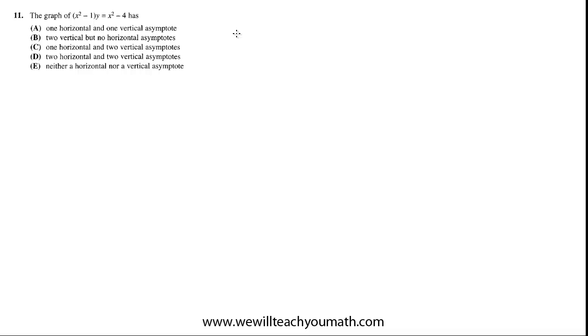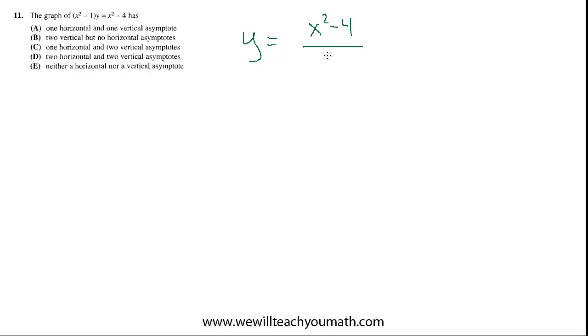Either way, we need to solve for y. So let's divide by this quantity x squared minus 1. We'll get y equals (x squared minus 4) over (x squared minus 1).